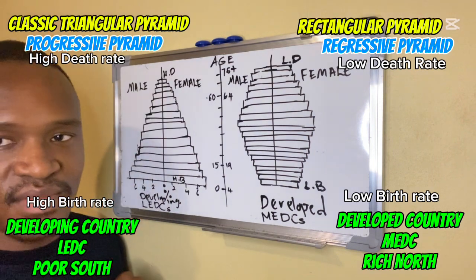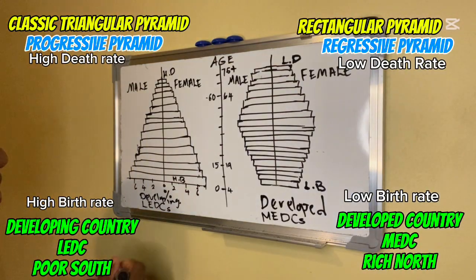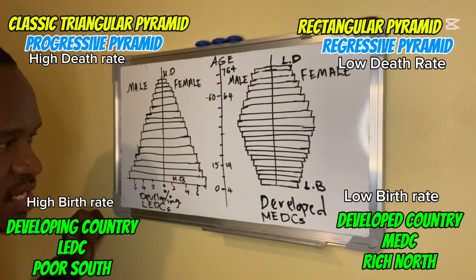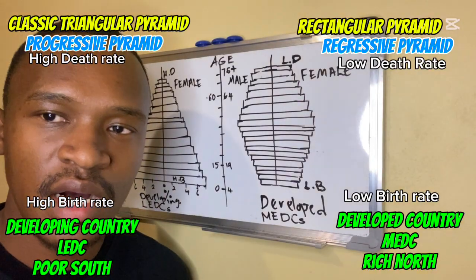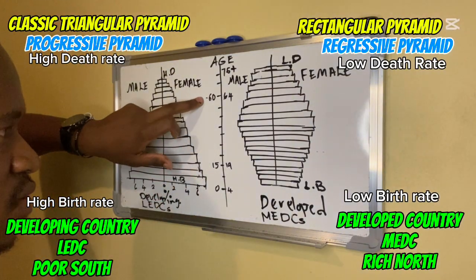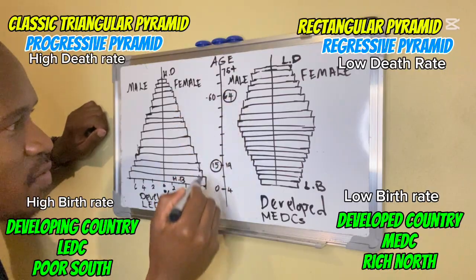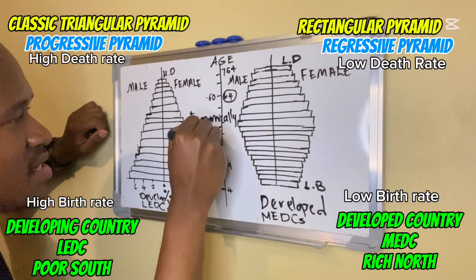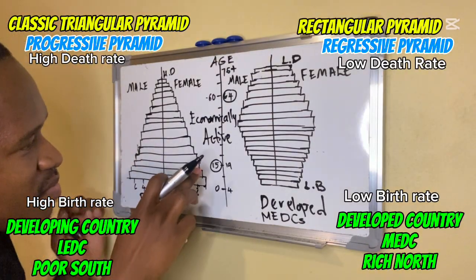To summarize so far: LEDCs have high birth rate, high death rate, and low life expectancy; MEDCs have low birth rate, low death rate, and high life expectancy. When we look at economically active people — those who are working and earning an income — in most countries we take the age range of 15 to 64. People between 15 and 64 are considered economically active.